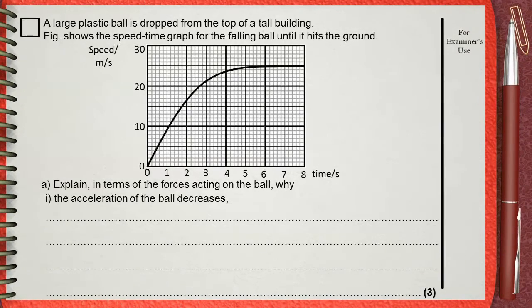A large plastic ball is dropped from the top of a tall building. The figure shows the speed-time graph for the falling ball until it hits the ground. Explain in terms of forces acting on the ball why the acceleration of the ball decreases.